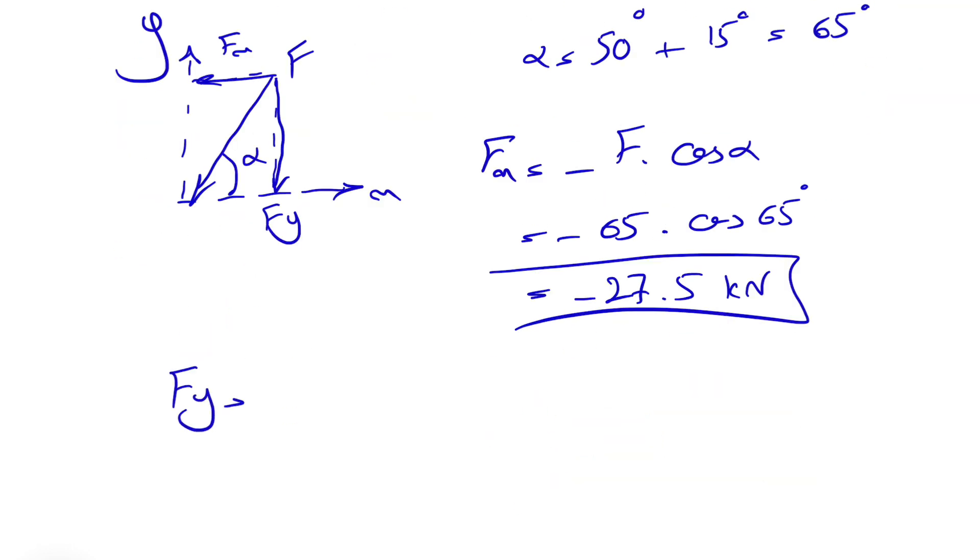That's the Fx part. It's easy enough to find the y component. Again, since it's in the opposite direction of y, it will be negative, so minus F times this time we'll have sine of alpha, which is 65 degrees, and that's going to be minus 58.9 kilonewton.